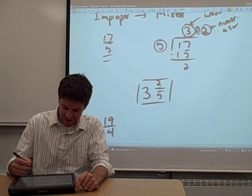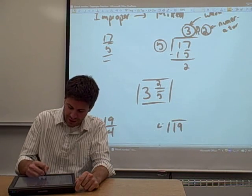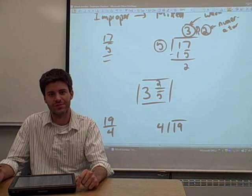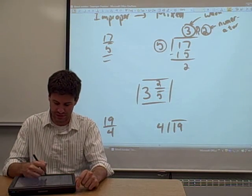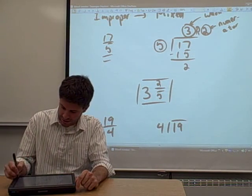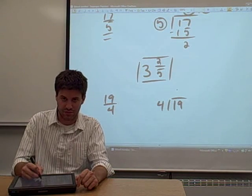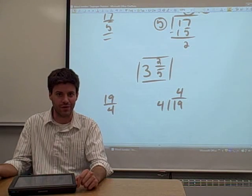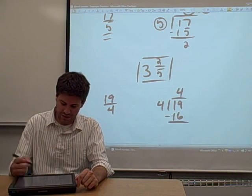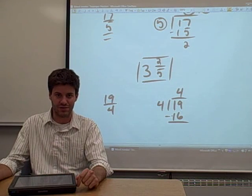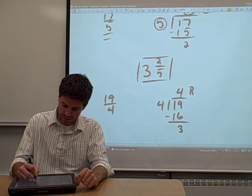Alright, let's check it out. Any time you want to convert an improper fraction to a mixed number, you just do long division. We have 19 inside the division sign and 4 outside. How many times does 4 go into 19? It goes in 4 times. You multiply 4 by 4 and you get 16. You subtract that result and you get your remainder — in this case, the remainder is 3.